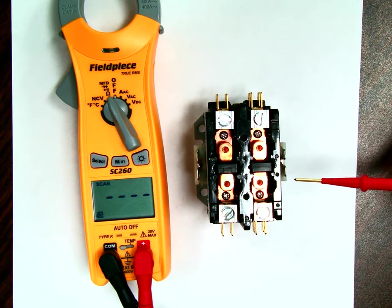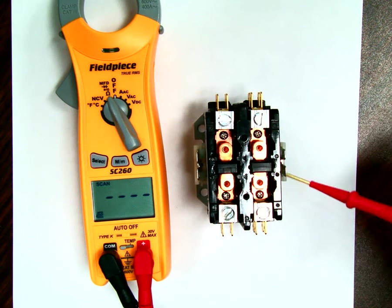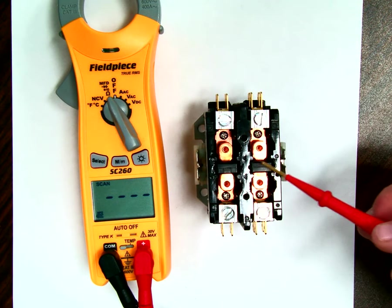So there's no electrical connection between these and the coil. All it is is a magnetic field that pulls a plunger down that has no electrical connection to these points right here.